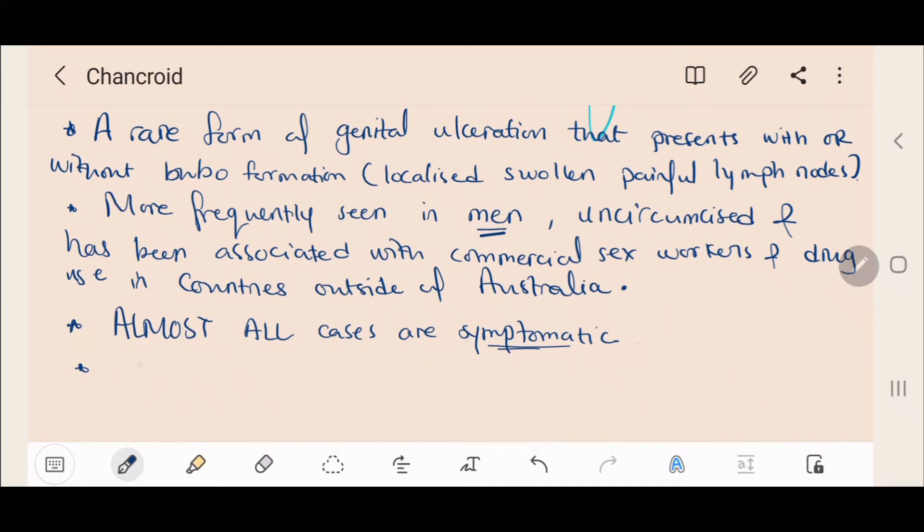Regions where chancroid is thought to occur include sub-Saharan Africa, Asia except Thailand, Latin America and the Caribbean.